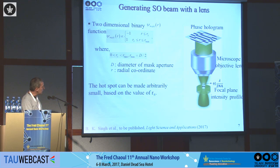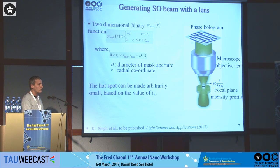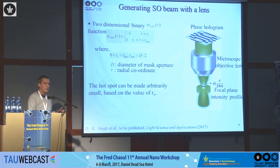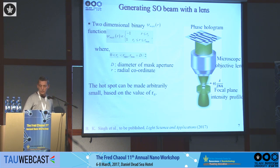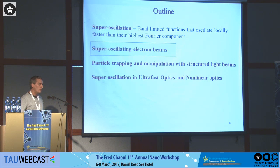The size of this feature is determined by the radius at which I do the jump from plus one to minus one. This is the equivalent of S — the shift of the cosine function I showed before. Now let's look at some applications done at Tel Aviv University. The first one is in electron optics: the idea is to do super-oscillating electron beams.